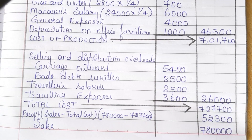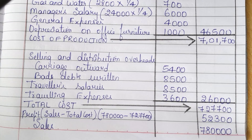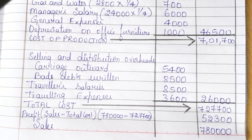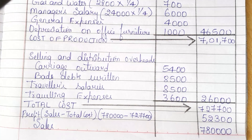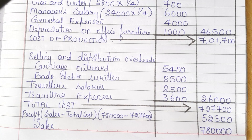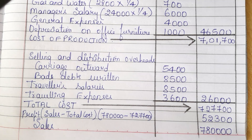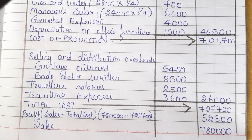Hope you have understood this question. You may ask why we have not considered cash discount allowed in the cost sheet. Remember, cash discount allowed is related to a cash item — it is in no way related to our cost. So cash discount allowed and donations are not included in the preparation of a cost sheet.